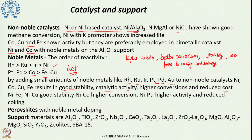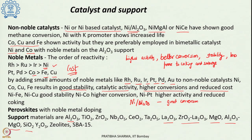Support is also very important as it serves several purposes. Various supports used for dry reforming of methane include Al2O3, TiO2, ZrO2, Nb2O5, CeO2, Ta2O5, La2O3, combinations such as ZrO2-La2O3, MgO, Al2O3-MgO, SiO2, Y2O3 (yttria), zeolites, and SBA-15. For example, nickel on alumina gives good methane conversion.